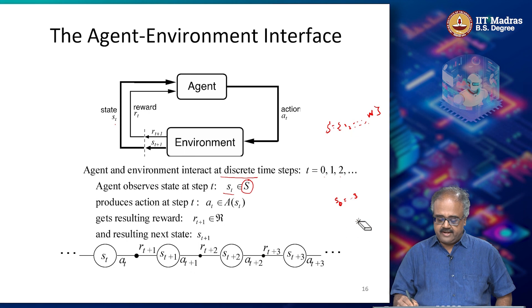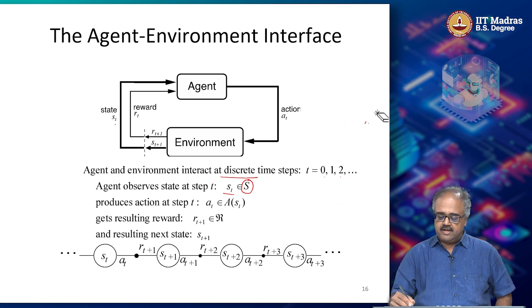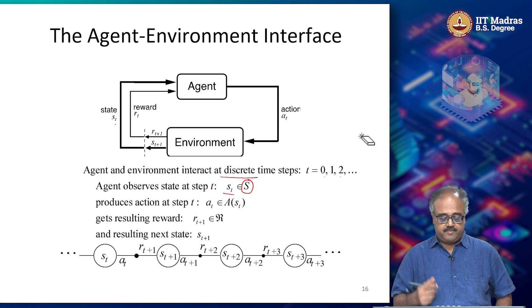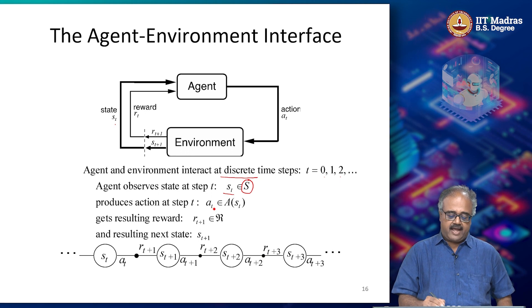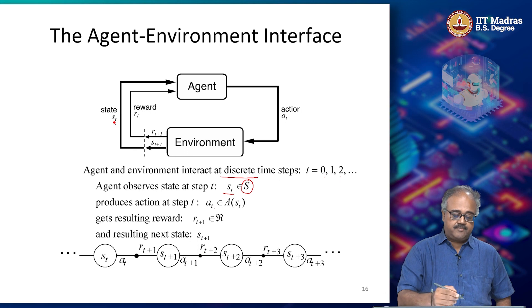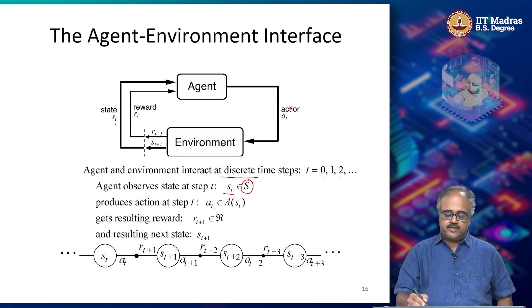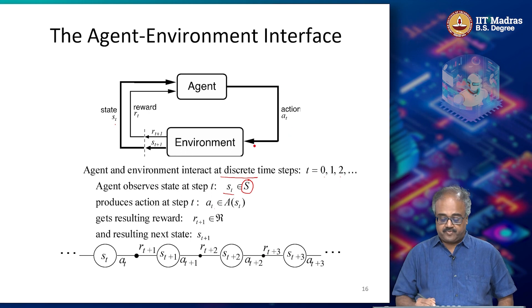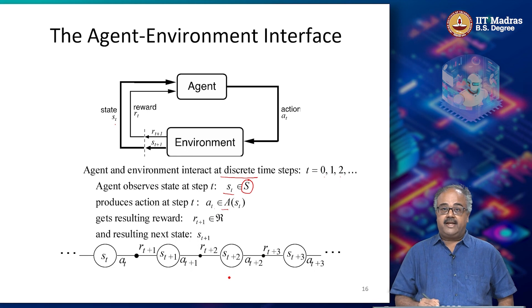S_t is a random variable that denotes what the state is at time t. Likewise, I have the action that the agent takes at time t. The agent observes state S_t and in response to that, it takes action A_t.